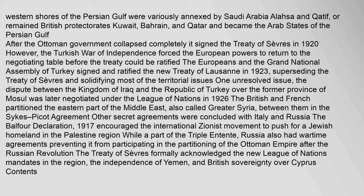Other secret agreements were concluded with Italy and Russia. The Balfour Declaration of 1917 encouraged the international Zionist movement to push for a Jewish homeland in the Palestine region. While a part of the Triple Entente, Russia also had wartime agreements preventing it from participating in the partitioning of the Ottoman Empire after the Russian Revolution. The Treaty of Sevres formally acknowledged the new League of Nations mandates in the region, the independence of Yemen, and British sovereignty over Cyprus.